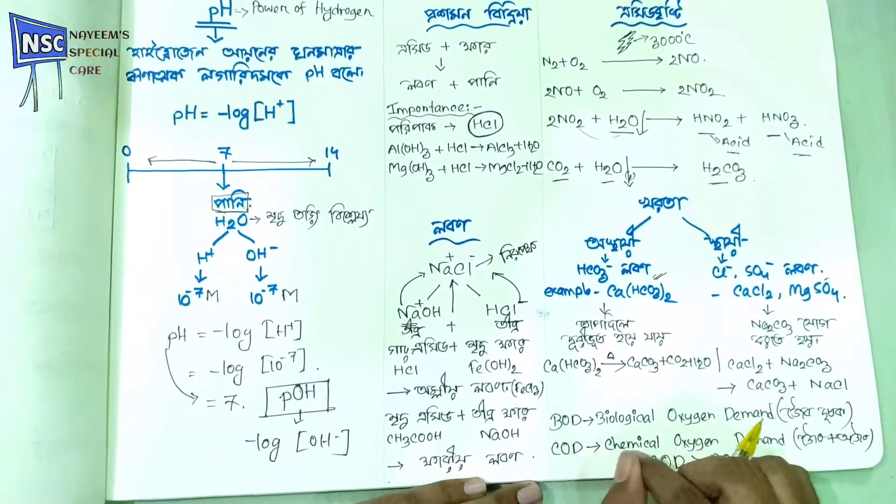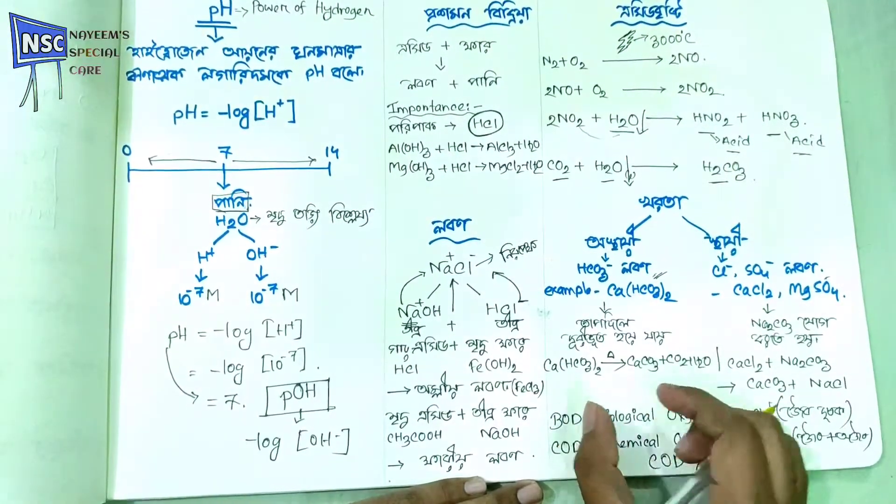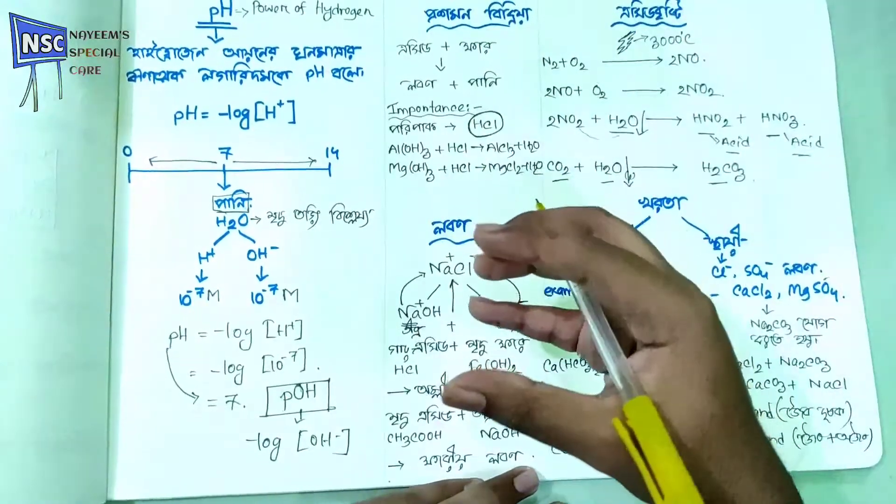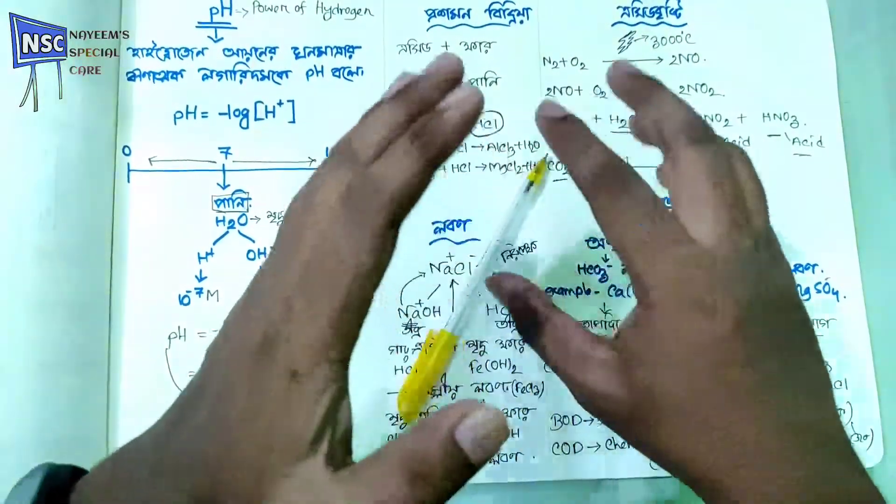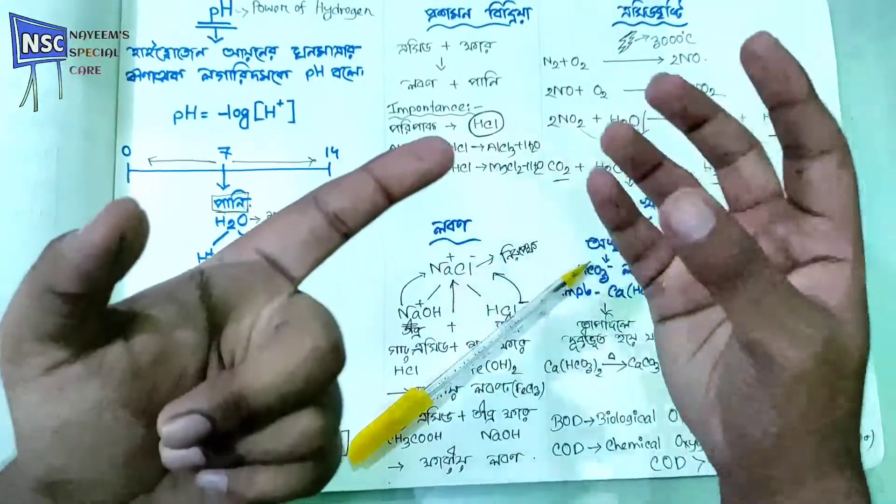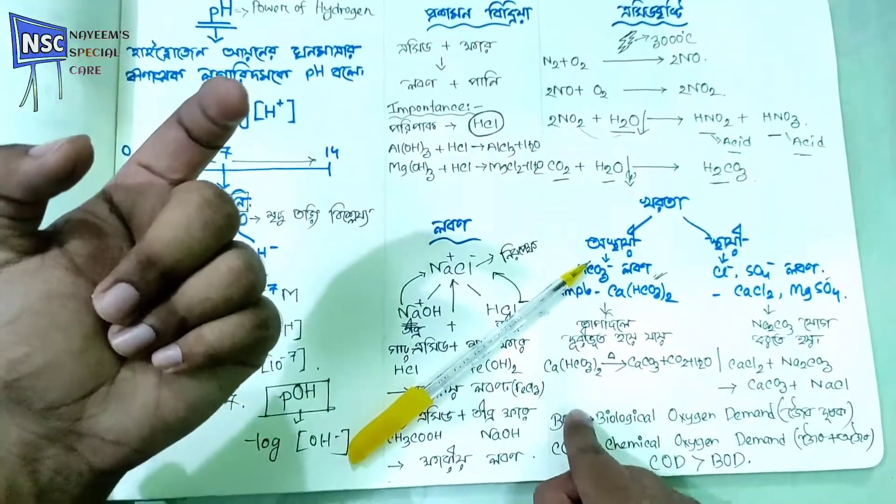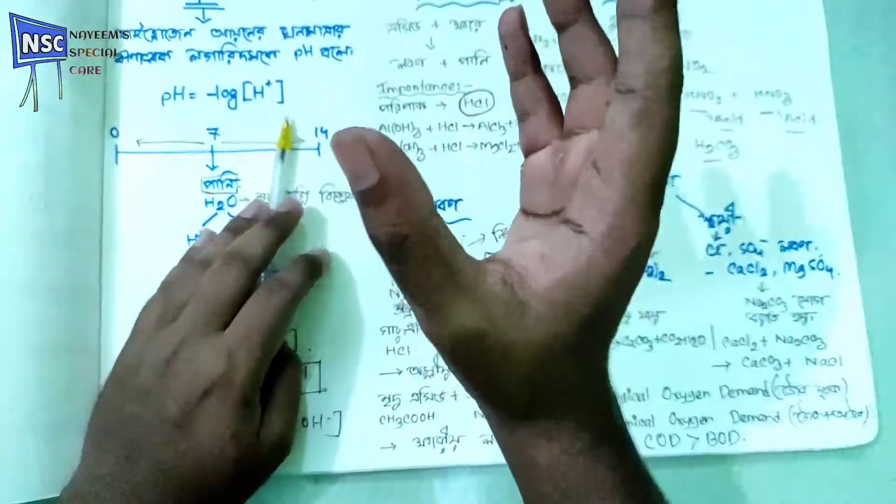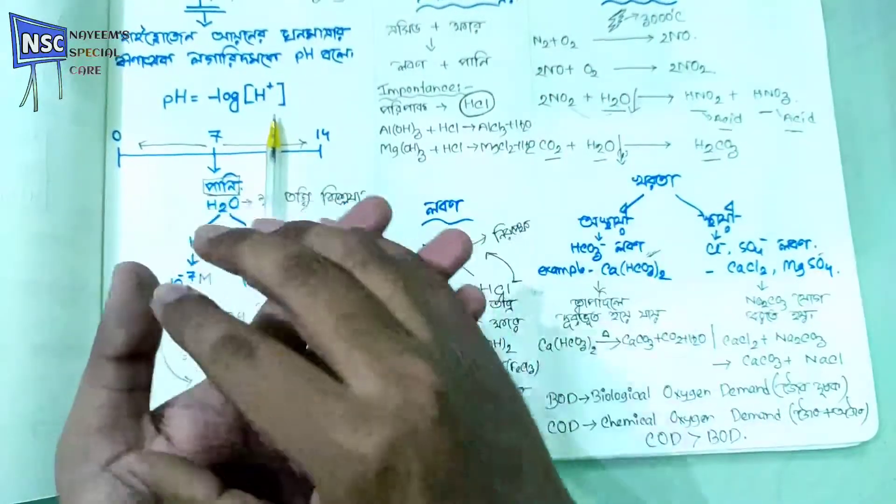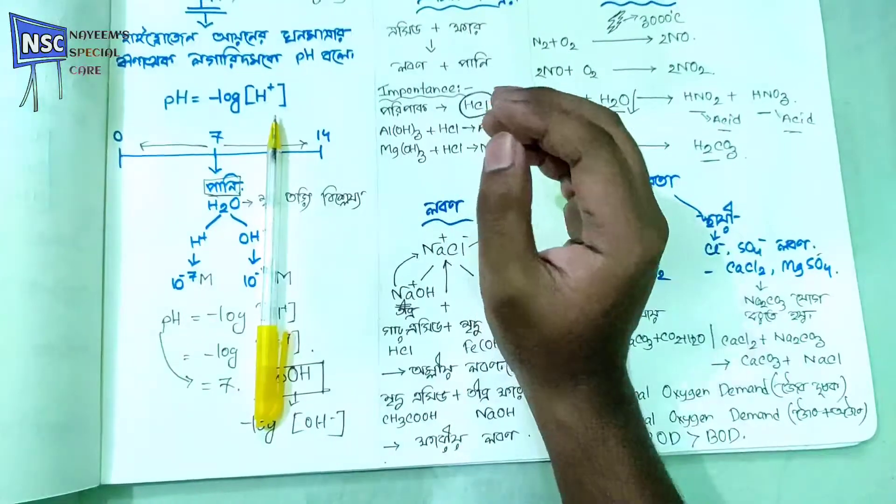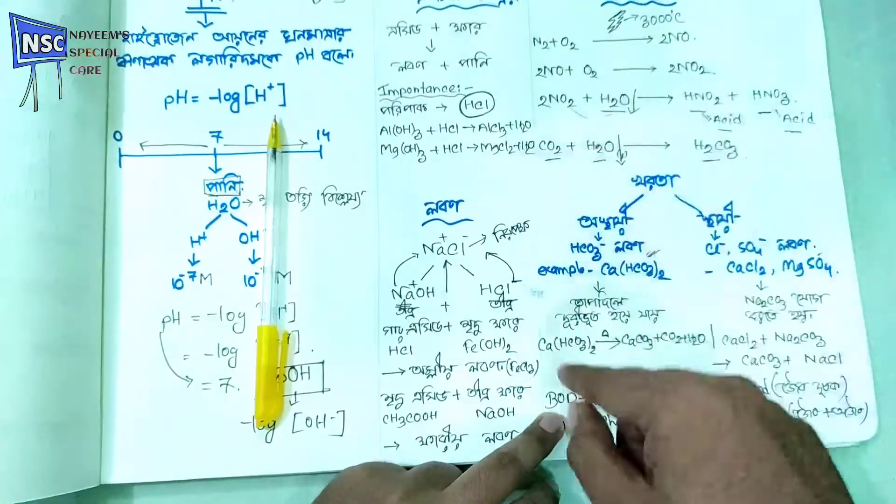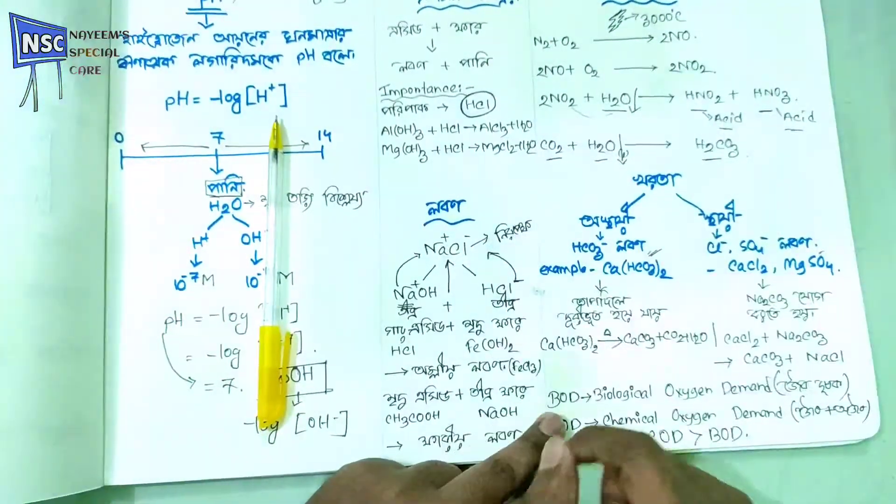We have BOD, which is biological oxygen demand, and COD is chemical oxygen demand. So, this means that the water is returnable. The returnable gain needs oxygen. If you want to take the returnable gain of oxygen, you need to remove oxygen.